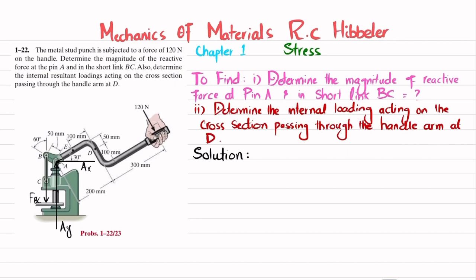We can find these reaction forces using equations of equilibrium. The first equation is that the sum of all moments about point A equals zero, taking counterclockwise moments as positive. From the geometry, this angle is 60 degrees, so this will be 30 degrees. FBC has two components: an x-component and a y-component.